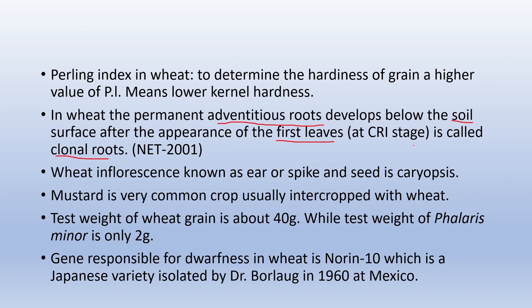Wheat inflorescence is known as ear or spike. Mustard is a very common crop usually intercropped with wheat. The test weight of wheat grain is 40 grams. Wheat has a mimicry weed called Phalaris minor, which looks very similar to wheat but has a different test weight — Phalaris minor has a test weight of 2 grams while wheat grain is 40 grams.